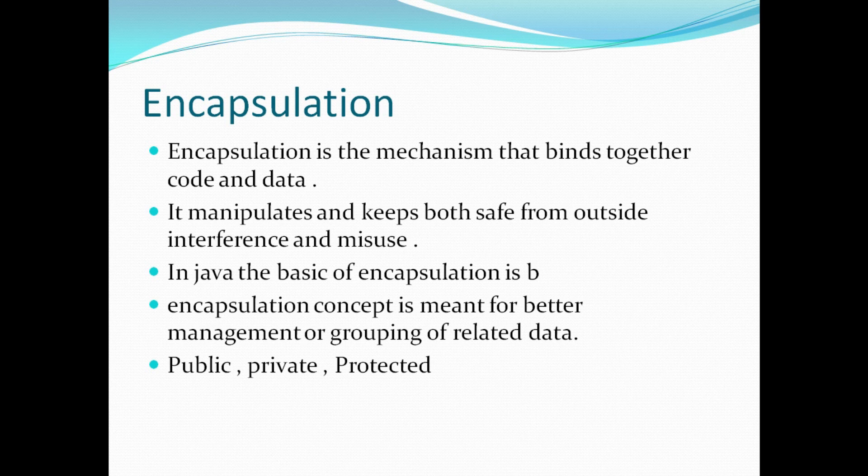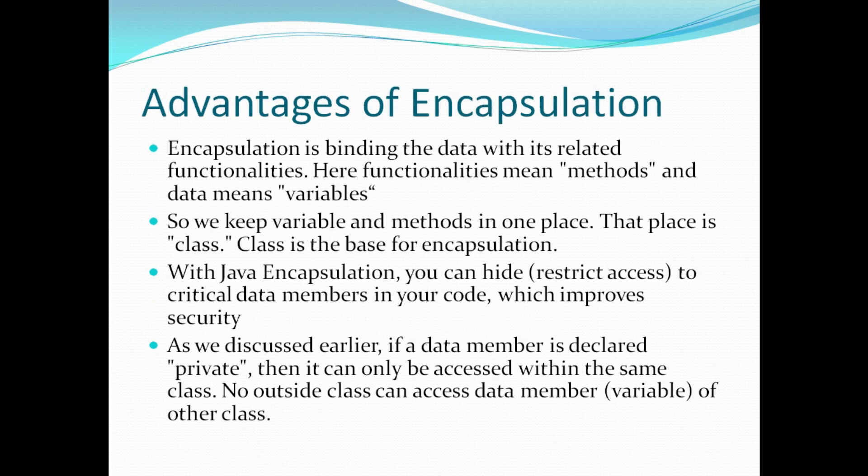If a variable is private, it can only be accessed within the scope of that class. Public members are accessible inside public functions. The protected scope covers the class and outside the class — meaning other classes that inherit that class. And public means it is accessible everywhere in all classes. Encapsulation binds data with its related functionalities — functionalities means methods and data means variables. So we keep variables and methods in one place, and that place is the class.